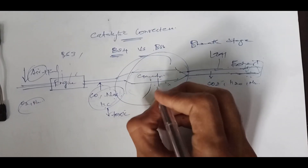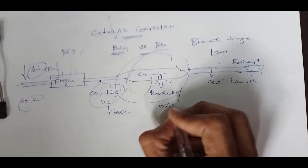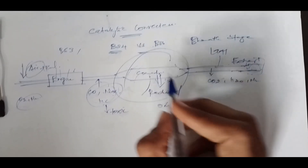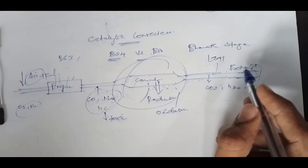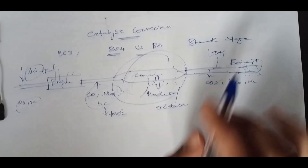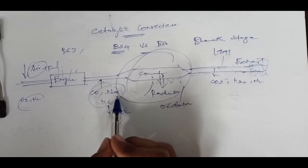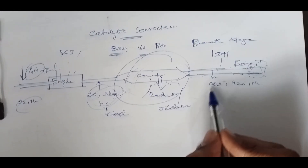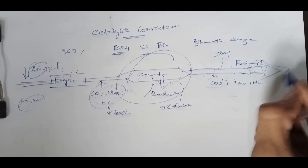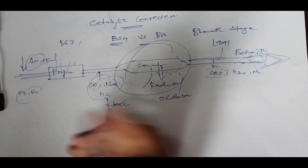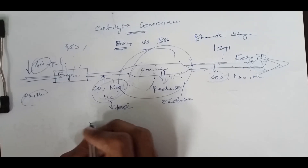The catalytic converter uses two reactions — reduction and oxidation. These convert the toxic exhaust gases. For example, carbon monoxide and nitrous oxide are converted by the catalytic converter into carbon dioxide, water, and nitrogen. This is how the converter works.